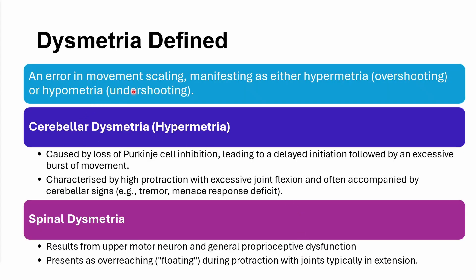In summary, dysmetria is usually hypermetria — hypometria is not commonly recognized, at least in domestic animals. It is an error in movement scaling. In the case of cerebellar disease, it is caused by loss of Purkinje cell inhibition, leading to delayed initiation followed by an excessive burst of movement, with high protraction and excessive joint flexion, often accompanied by tremor and menace deficits. Spinal dysmetria results from a combination of upper motor neuron and general proprioceptive dysfunction, with a more floating gait during protraction and joints typically in extension.